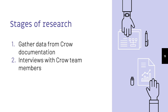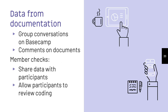Our research has two stages: gathering data from CROW documentation, then conducting interviews with CROW team members to learn more about trends the documentation suggests. In both stages, participants actively review the data we're gathering and shape the research through member checks. To gather contextual data, we analyze conversations on Basecamp and comments made in documents such as Google Docs. Looking at these group conversations can help us identify the tacit knowledge that informs the CROW team, in preparation for discussing that knowledge with participants in interviews.